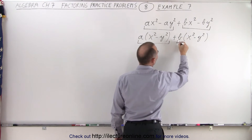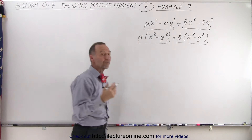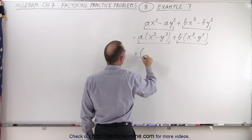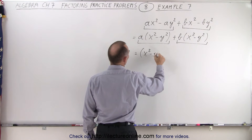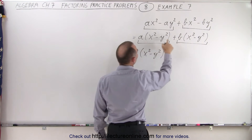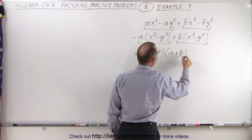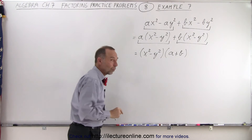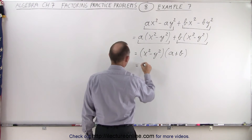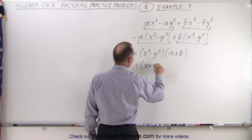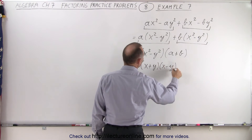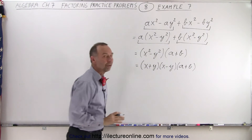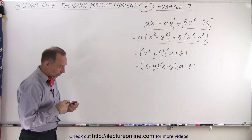Notice we now have two terms, and on those two terms we have a common factor again: x squared minus y squared, which can be factored out. So this can be written as x squared minus y squared, times A plus B. But we're not done yet, because x squared minus y squared is the difference of squares, which can be factored as x plus y times x minus y. And then we still have the A plus B. That's the final factored form of our original problem.